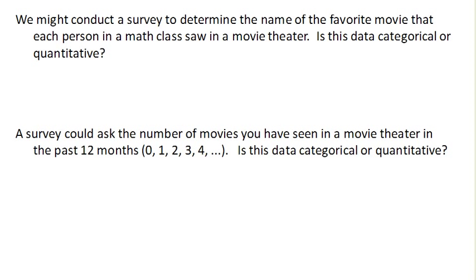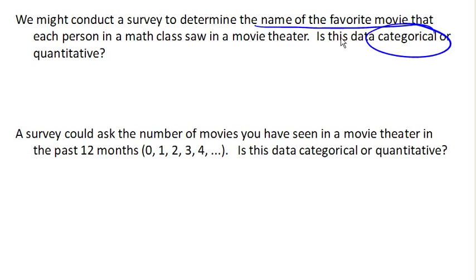Suppose we conduct a survey to determine the name of the favorite movie that each person in the math class last saw in a movie theater. Is this data categorical or quantitative? Well, we're talking about names of movies, and that is certainly not numeric in nature. We're certainly not going to be able to do any arithmetic with this. So this is definitely categorical.